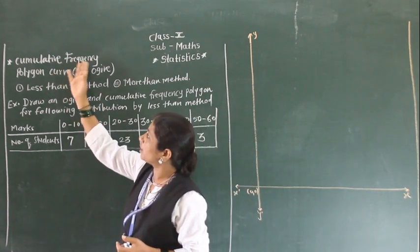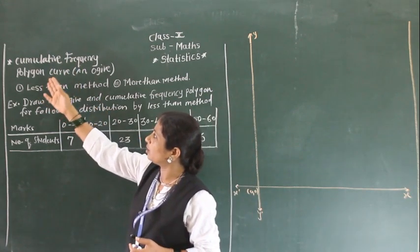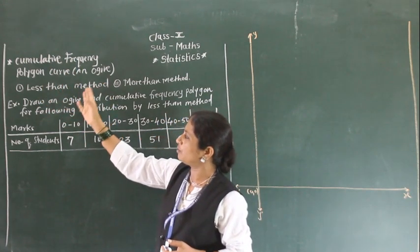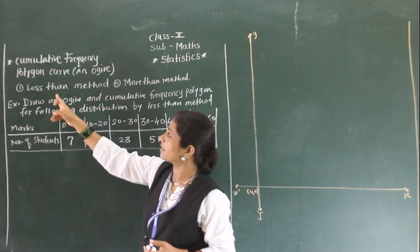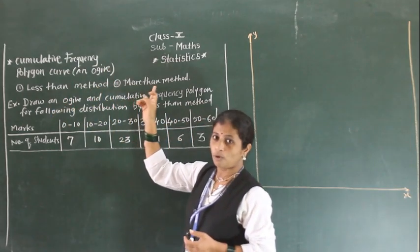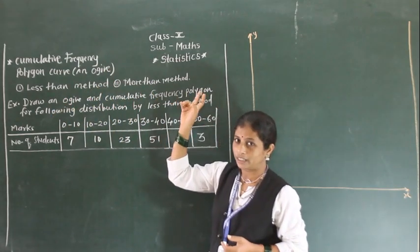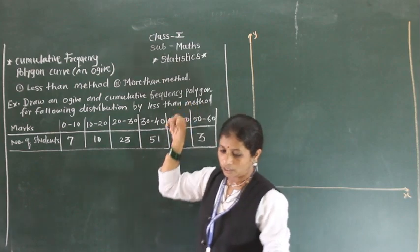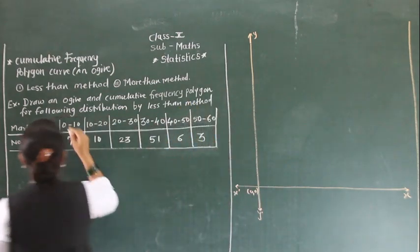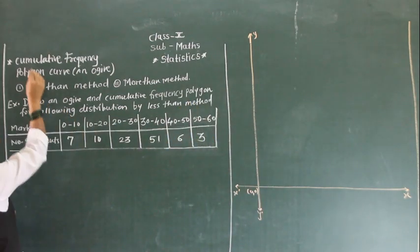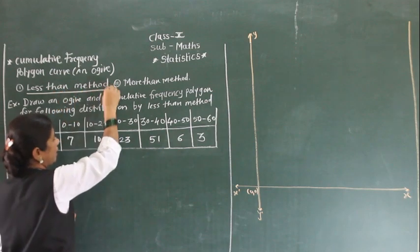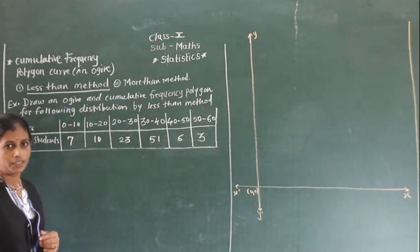Now, the cumulative frequency polygon curve — that is an ogive — we have to draw by two methods: the less than method and the more than method. In this session, we will see how to draw this curve by using the less than method.